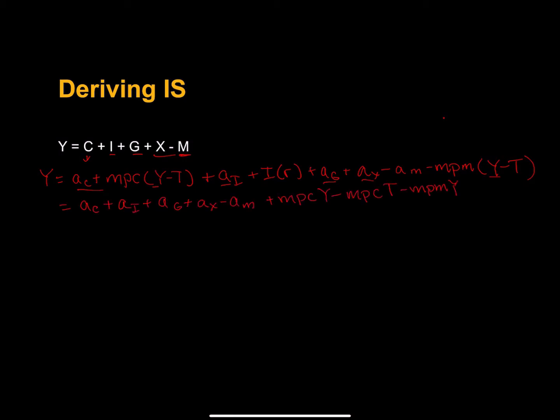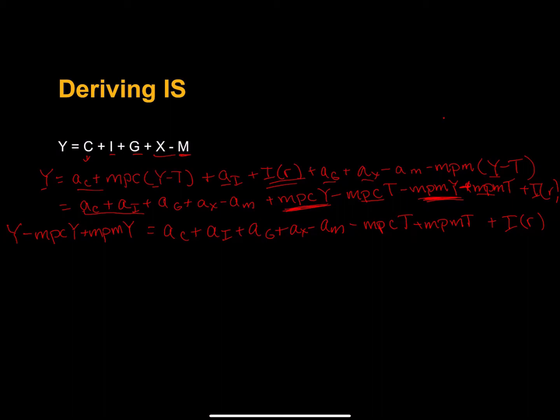So let's sub in each component as described on the previous slide. Now I am going to collect all of these autonomous terms and distribute all of these terms that depend on real GDP. And I am going to add on this investment component that's negatively related to the interest rate. I am going to collect my terms that include y and move them to the left hand side of this equation. Now I am going to factor out my y. I am going to consolidate these two when I rewrite it. And solve for y.